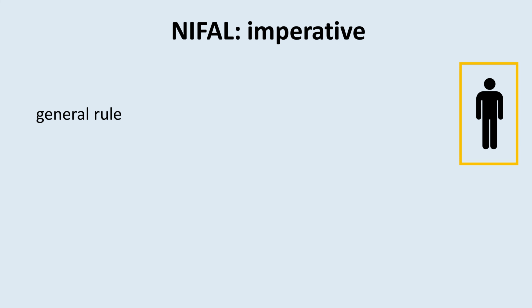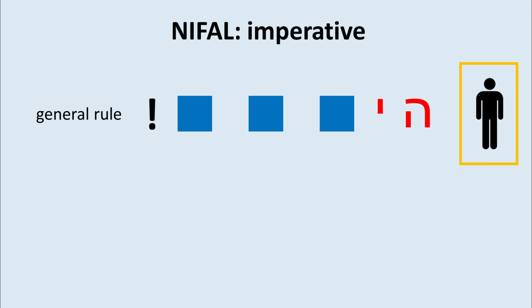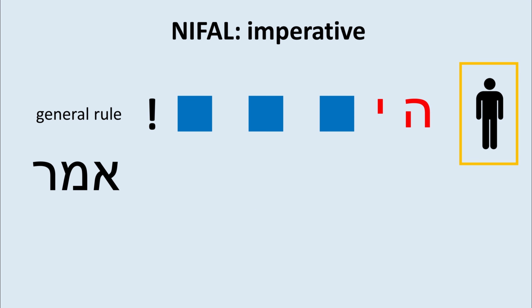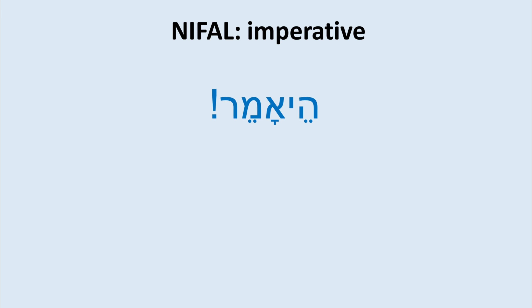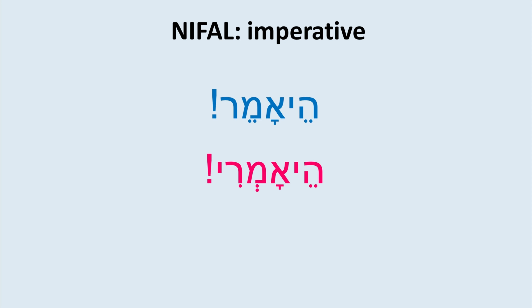If you decide to go for the linguistic imperative — the correct imperative in linguistic terms — the general rule is: you put he in front of the root. This comes from le-he, as seen in the infinitive. So he in front of the root gives us he-amer — the imperative of 'to be said' or 'to be told.' From here we form the female version: he-amri, and he-amru.